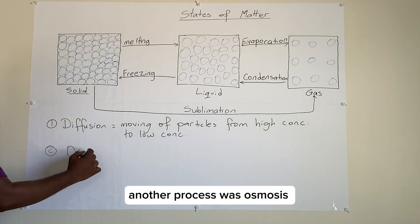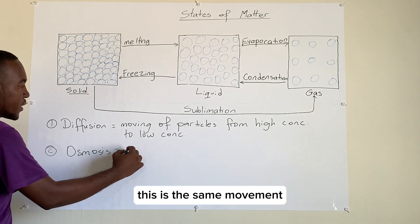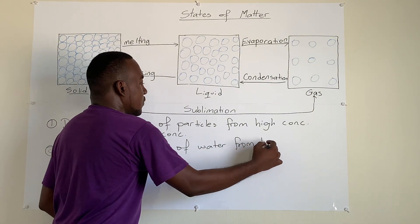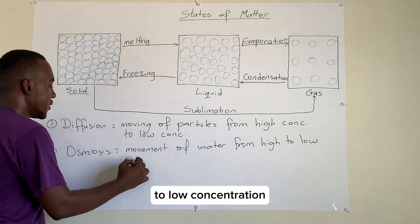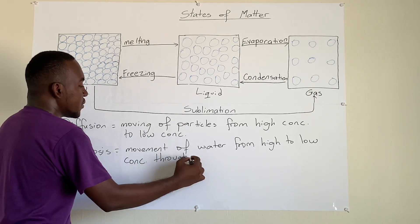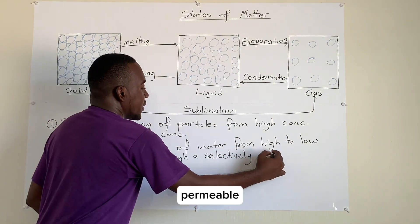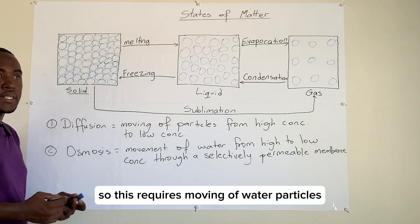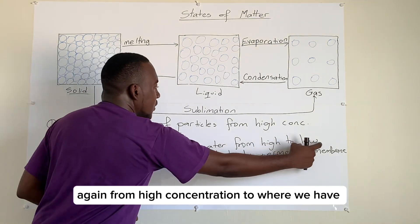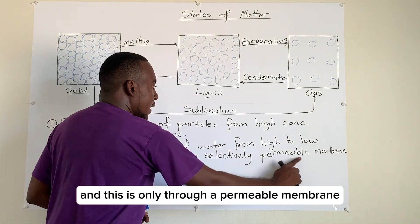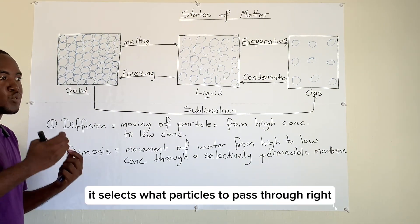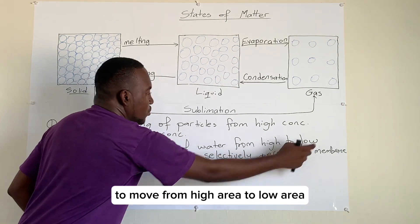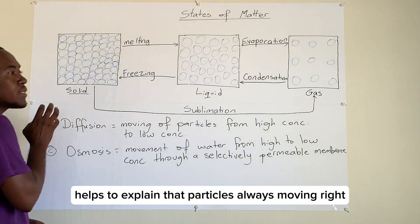Another process is osmosis. This is the same movement, but this time involving water moving from high to low concentration. However, this time we are using a selectively permeable membrane. Osmosis requires the movement of water particles from high concentration to where there is limited water, and this is only through a permeable membrane. A permeable membrane selects what particles can pass through, and it selects water particles to move from the high area to the low area. These two processes help explain that particles always move.